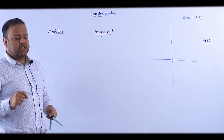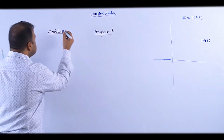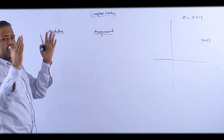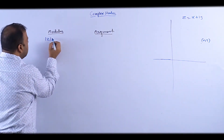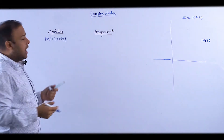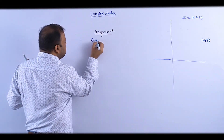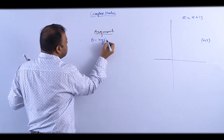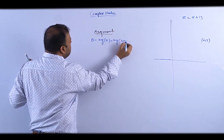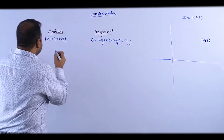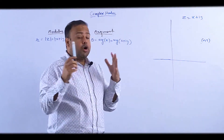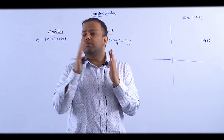The first idea is modulus. For modulus, we use two vertical lines — modulus of x plus iy. For argument, we use theta, or I can say argument of z, that is argument of x plus iy. We also denote modulus by r. Let's work on modulus first.